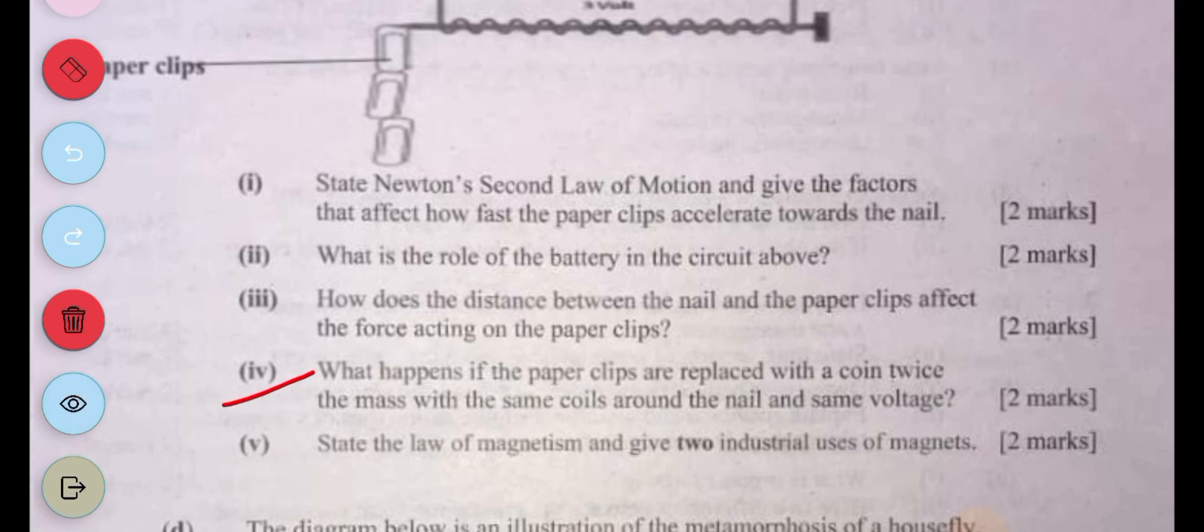Question four: What happens if the paperclips are replaced with a coin twice the mass with the same coils around the nail and the same voltage? A coin is most likely to have a greater mass, so the acceleration would reduce if the same coils and voltage are maintained.